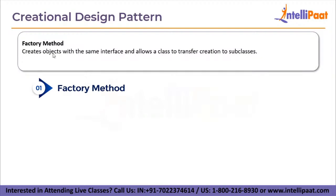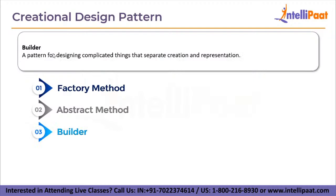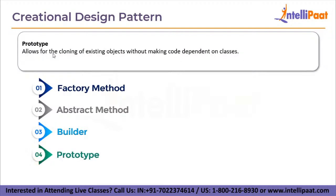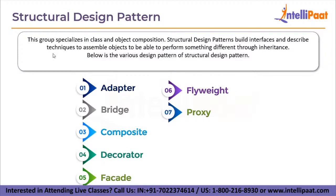The factory method creates objects with the same interface and allows a class to transfer creation to subclasses. In the abstract factory, designs are based on a super factory that generates additional factories — often referred to as the factory of factories. The builder pattern separates creation and representation for designing complicated objects. Prototype allows cloning of existing objects without making code dependent on classes. The singleton pattern ensures that only one object is generated from a single class, providing a method to access that object directly without initializing it.